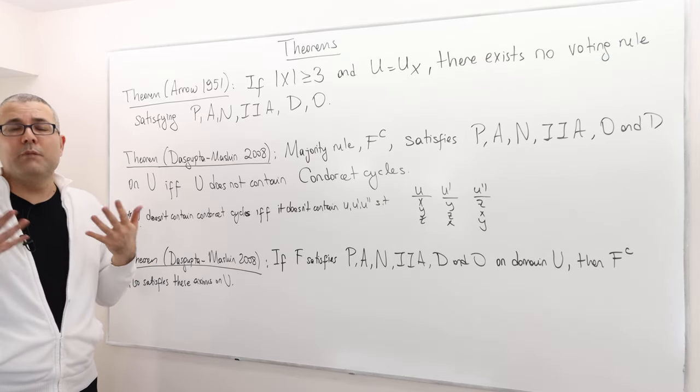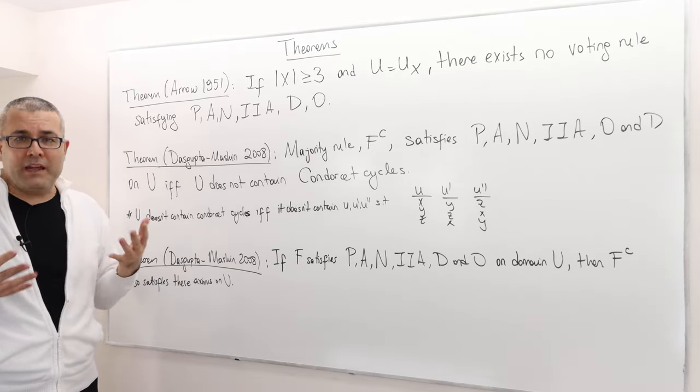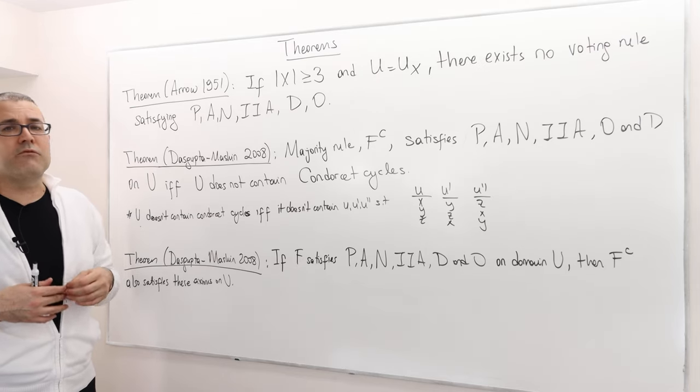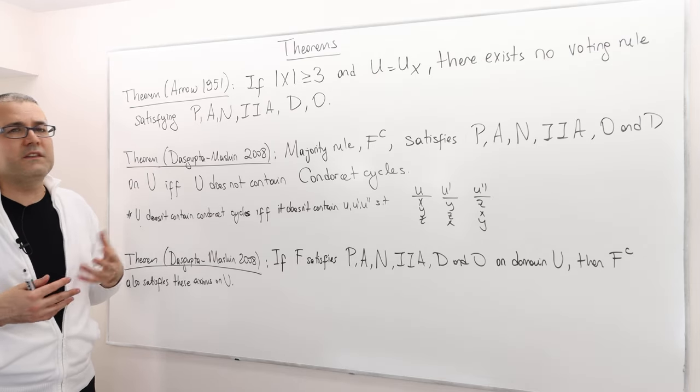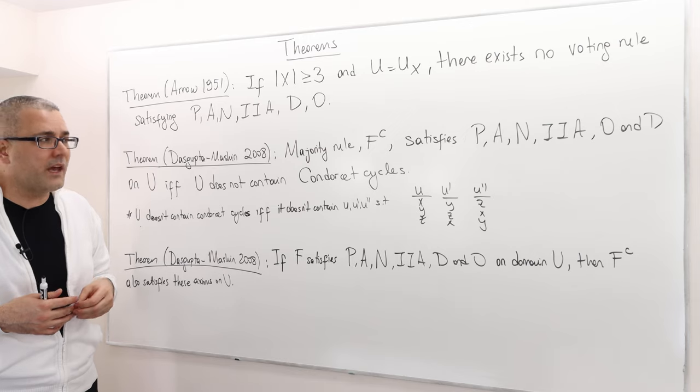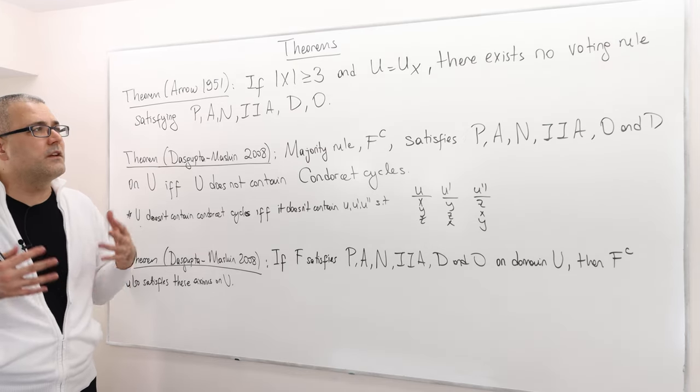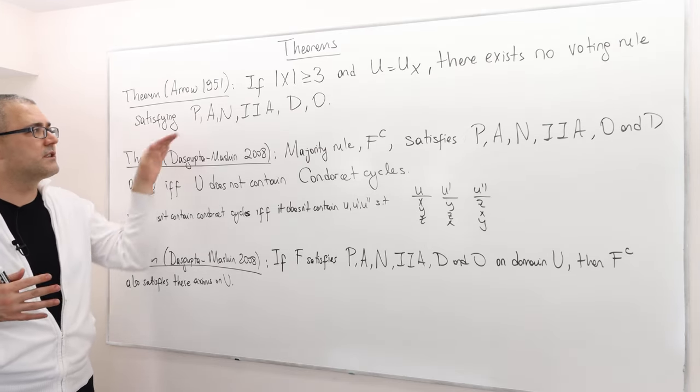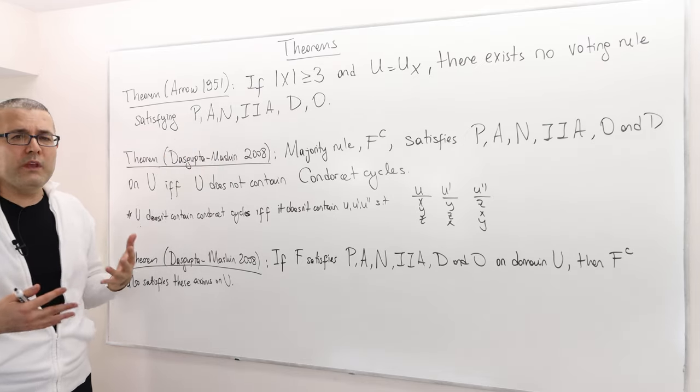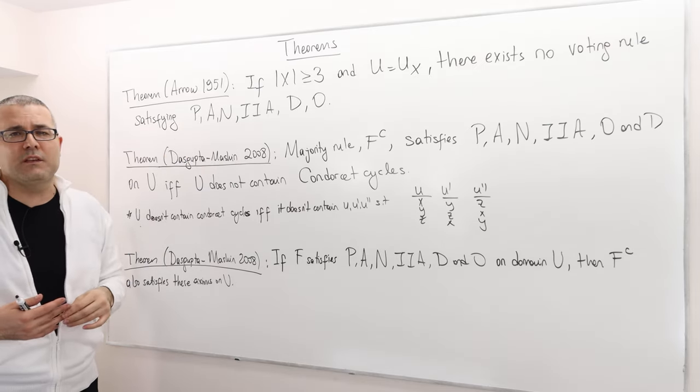Well this is an impossibility theorem, it's bad news. How can I get rid of this impossibility result? I mean, maybe we don't have a voting rule which gives us all we want, but why don't we give up some of those axioms?